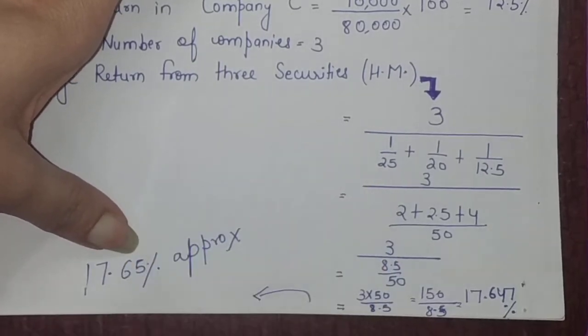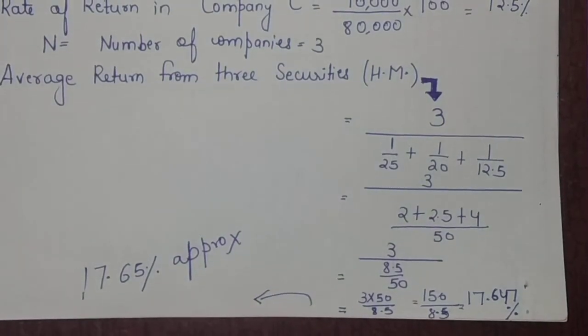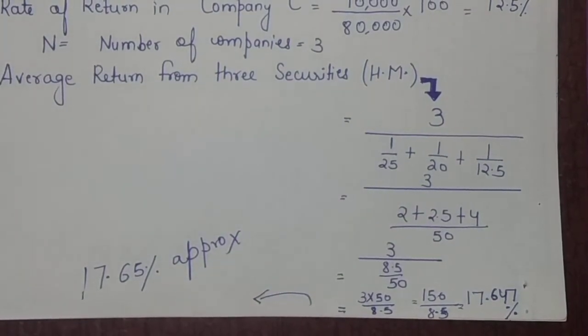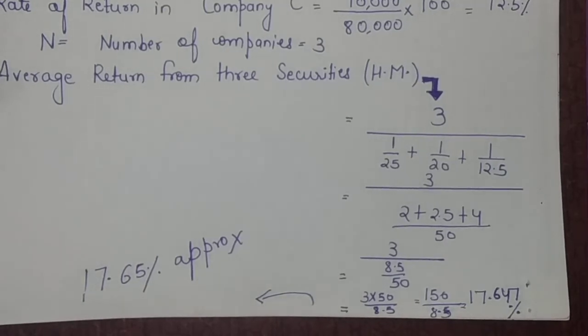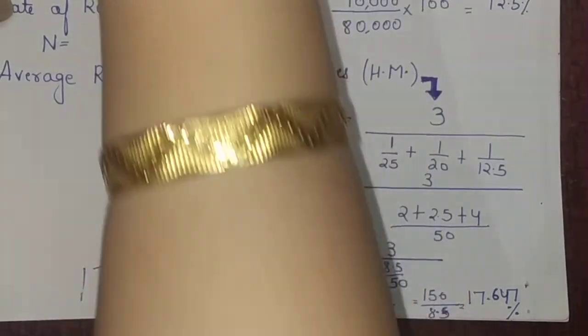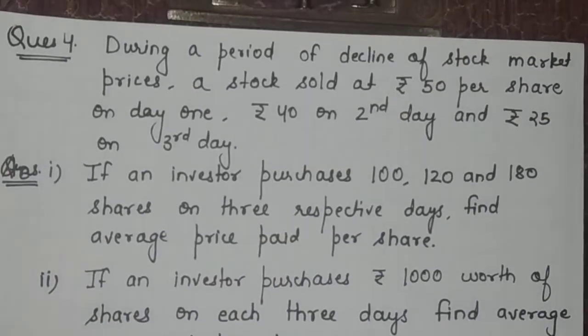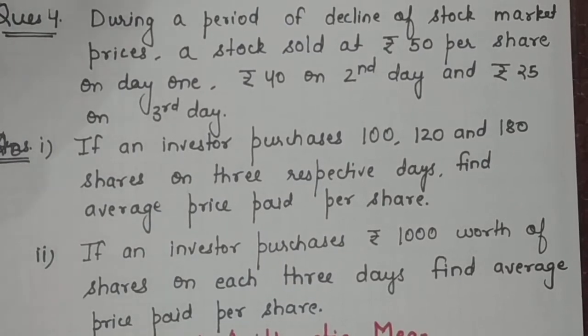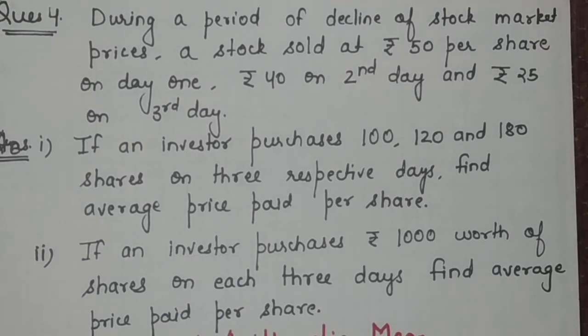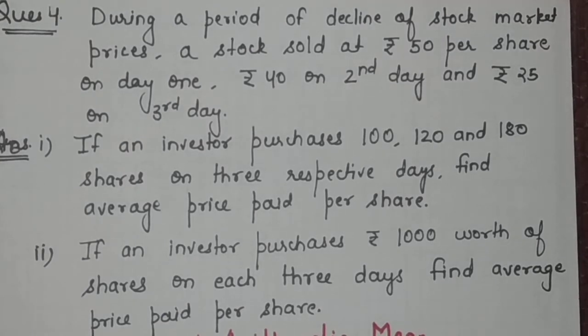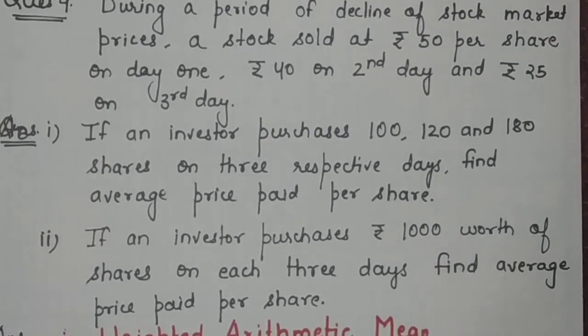I hope this question is clear to you. In case of any doubts, you can put them in the comment box. Now let's proceed to the fourth question. During a period of decline of stock market prices, a stock sold at 50 rupees per share on day 1, 40 rupees on the second day, and 25 rupees on the third day. If an investor purchases 100, 120, and 180 shares on the three respective days, find the average price paid per share.